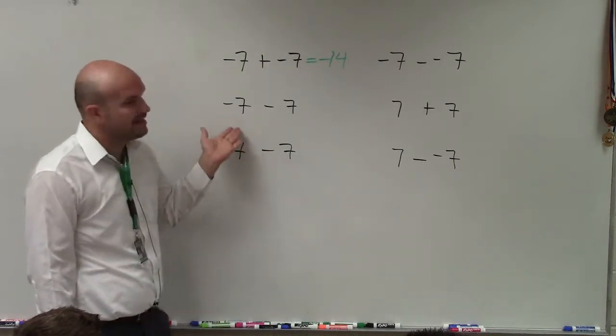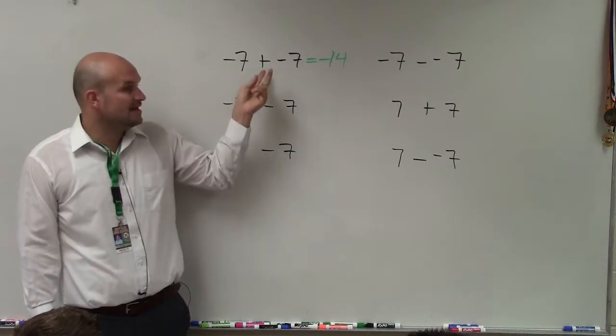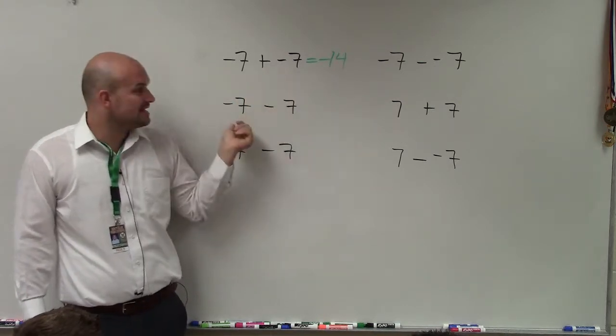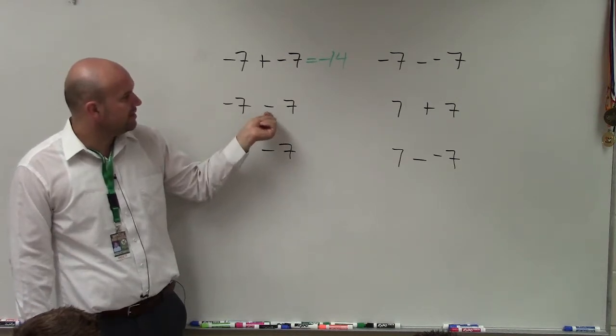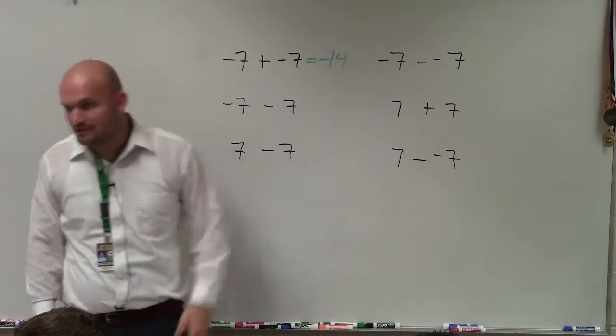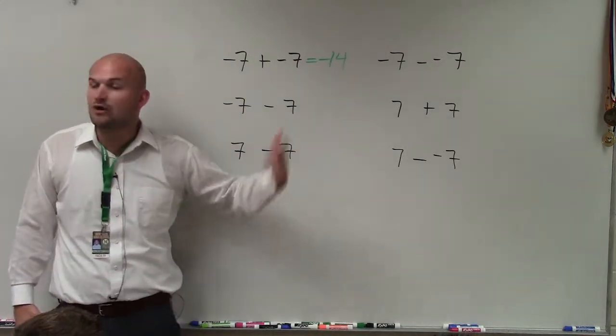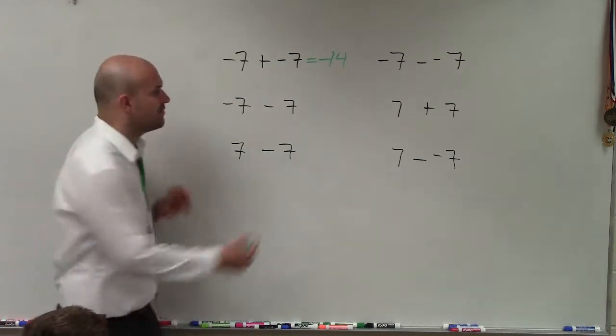The next thing is, again here, now you owe somebody $7. But instead of adding that wealth to somebody else, it's the same thing. You owe somebody $7. But now, again, you're subtracting. You're borrowing $7 more. So if you owe $7 and you borrow $7 more, then your wealth is, again, negative 14.